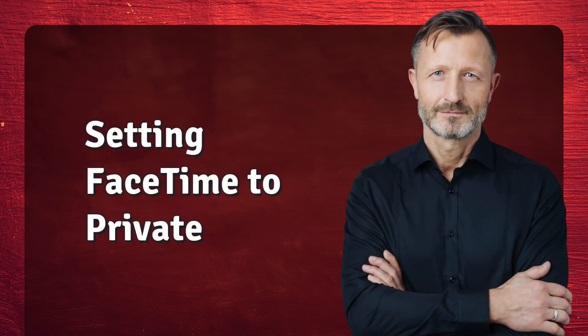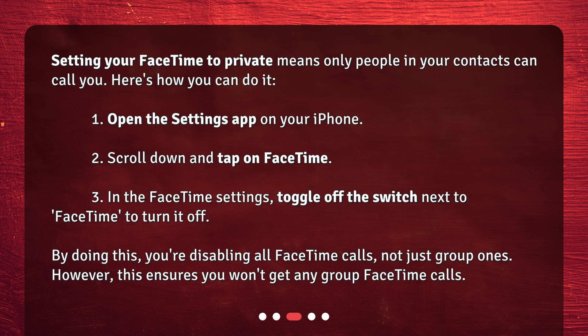Setting FaceTime to private means only people in your contacts can call you. Here's how you can do it: 1. Open the Settings app on your iPhone. 2. Scroll down and tap on FaceTime. 3. In the FaceTime settings, toggle off the switch next to FaceTime to turn it off. By doing this, you're disabling all FaceTime calls, not just group ones. However, this ensures you won't get any group FaceTime calls.